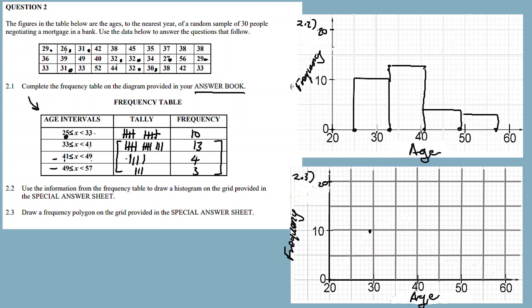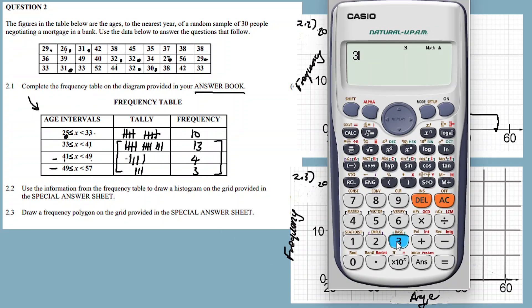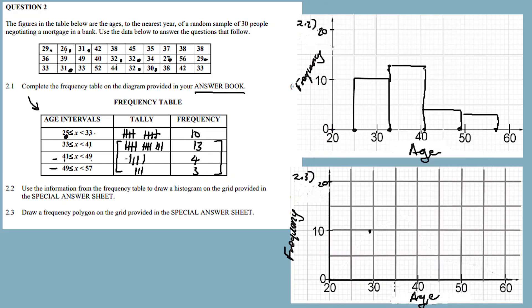Then for the second interval: 33 plus 41 equals 74, divided by 2 gives you 37. So you plot the point at x = 37 with frequency 13.